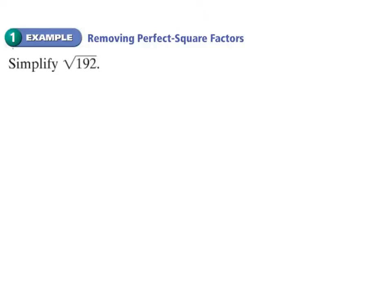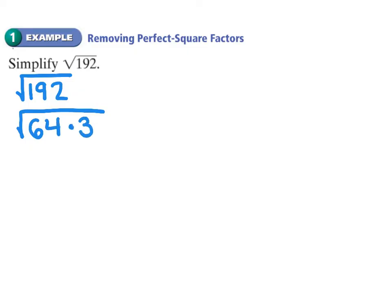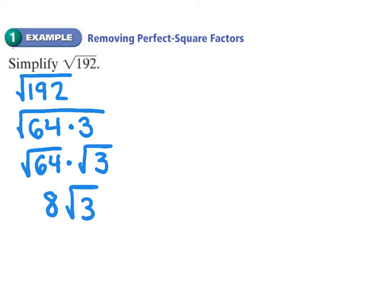Now, if we want to simplify the square root of 192, the largest perfect square that divides into 192 is 64. So I can rewrite it as the product of 64 times 3, separate the radical so it's the square root of 64 times the square root of 3, and the square root of 64 is 8. So the final answer is 8 square root of 3.